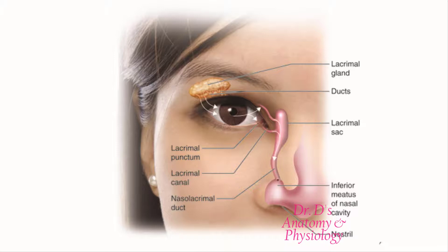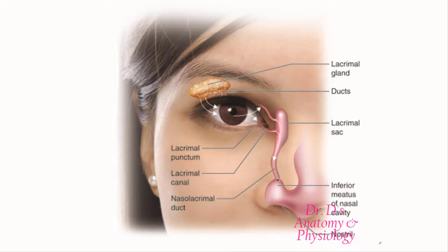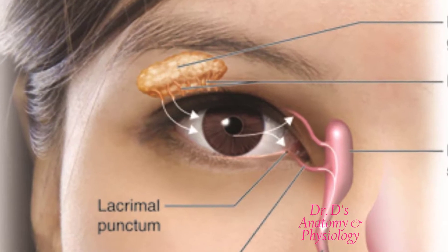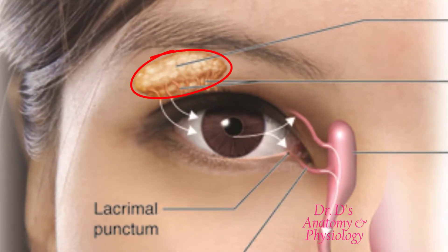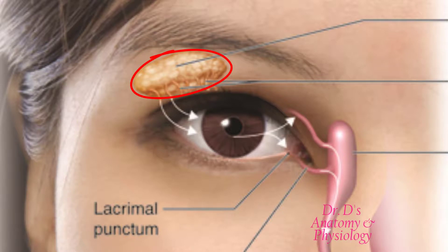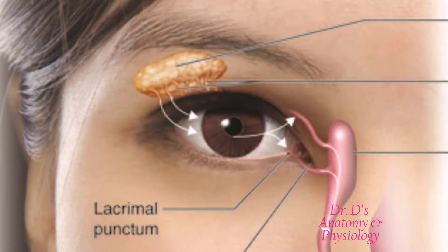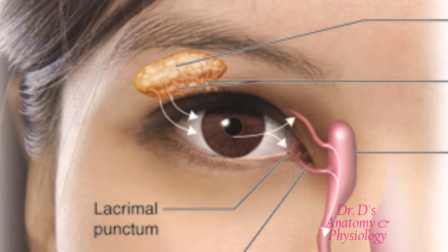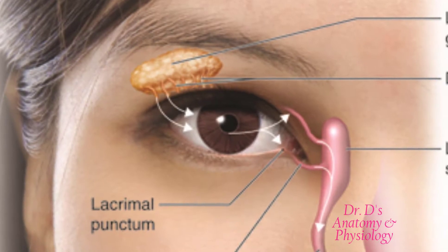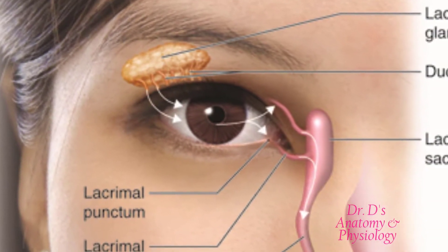Now what is this lacrimal sac doing? Here's a picture showing the tear system — the system that produces and drains tears that keep the exterior of the eye lubricated. Up in this figure we have the lacrimal gland; you may remember that in the frontal bone there is a lacrimal fossa which accommodates the lacrimal gland. The lacrimal gland produces tears that constantly flow onto the surface of the eyeball, keeping the conjunctiva moist. These tears then need to drain, as indicated by the arrows, through a drainage system.